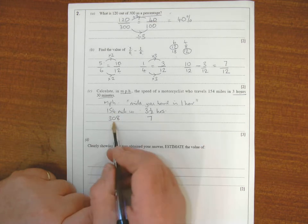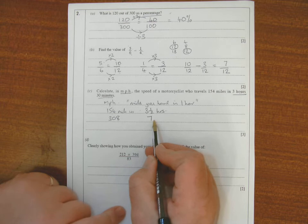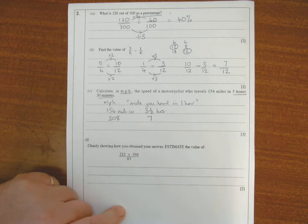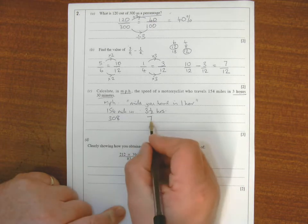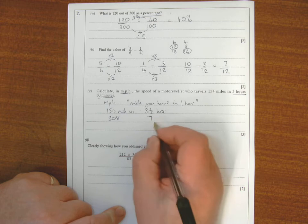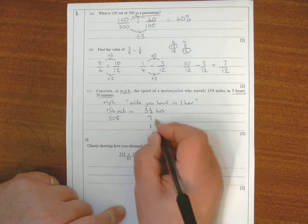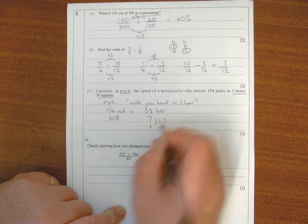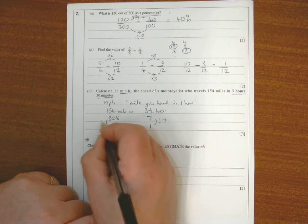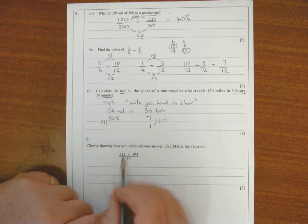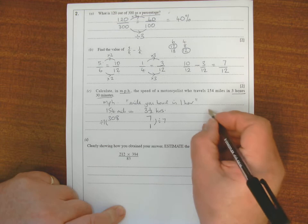So 154 miles in 3 and a half hours is the same as 308 miles in 7 hours. So I want to know how far I go in one hour, so I need to get down to one. I'm going to divide by 7, so I'm going to do exactly the same here, divide by 7.